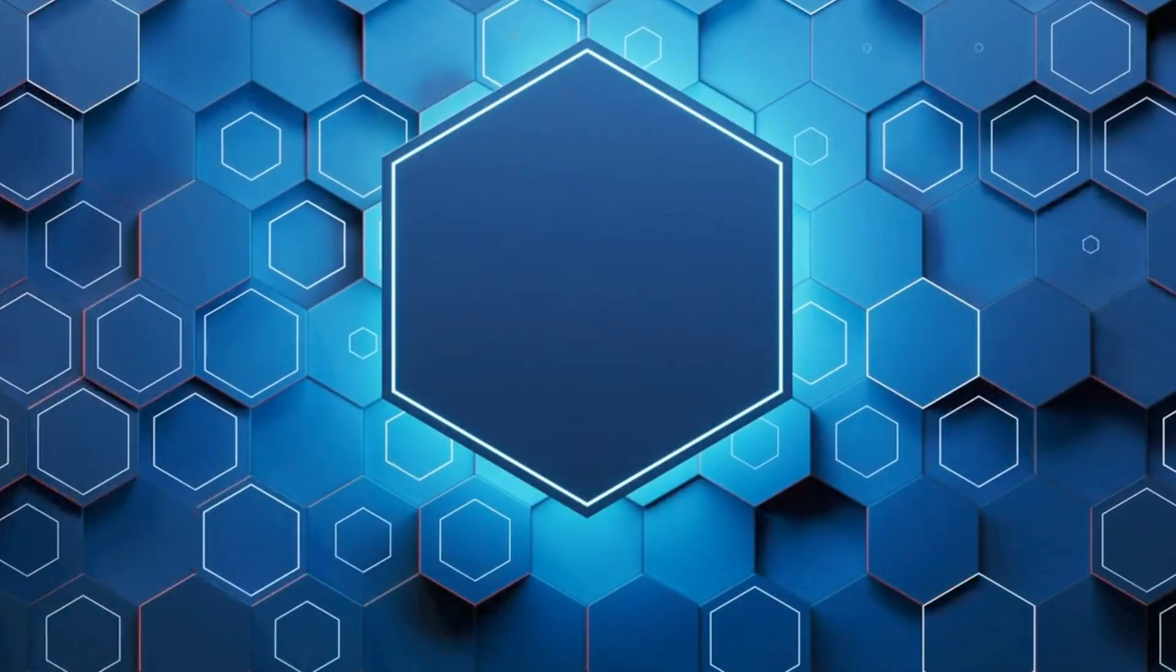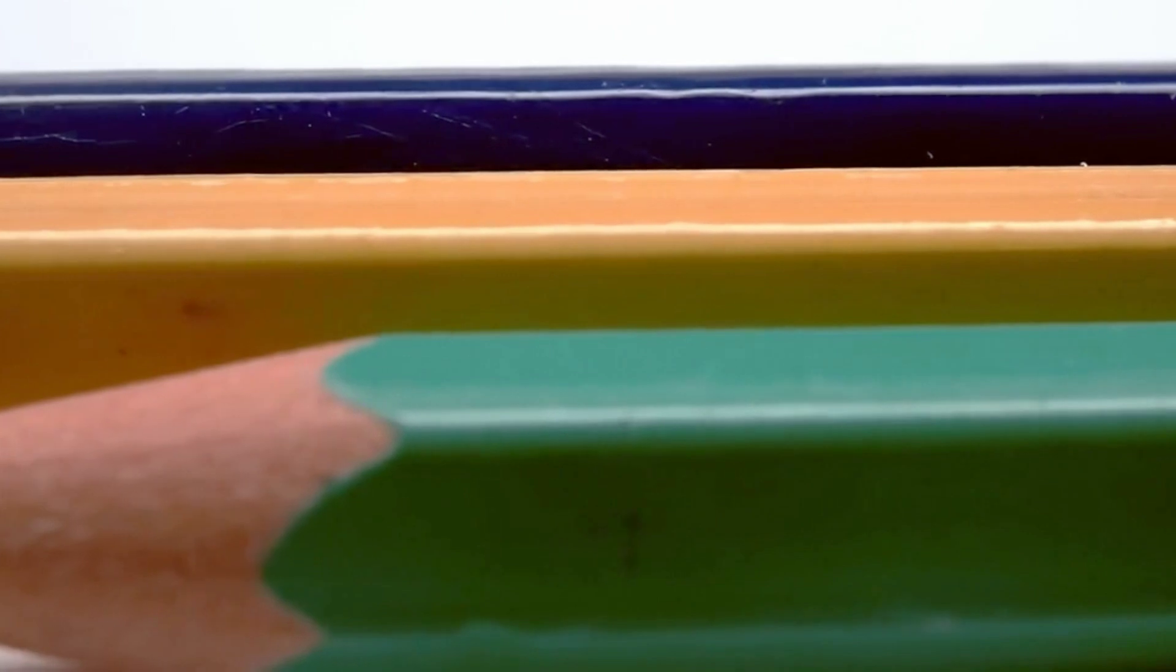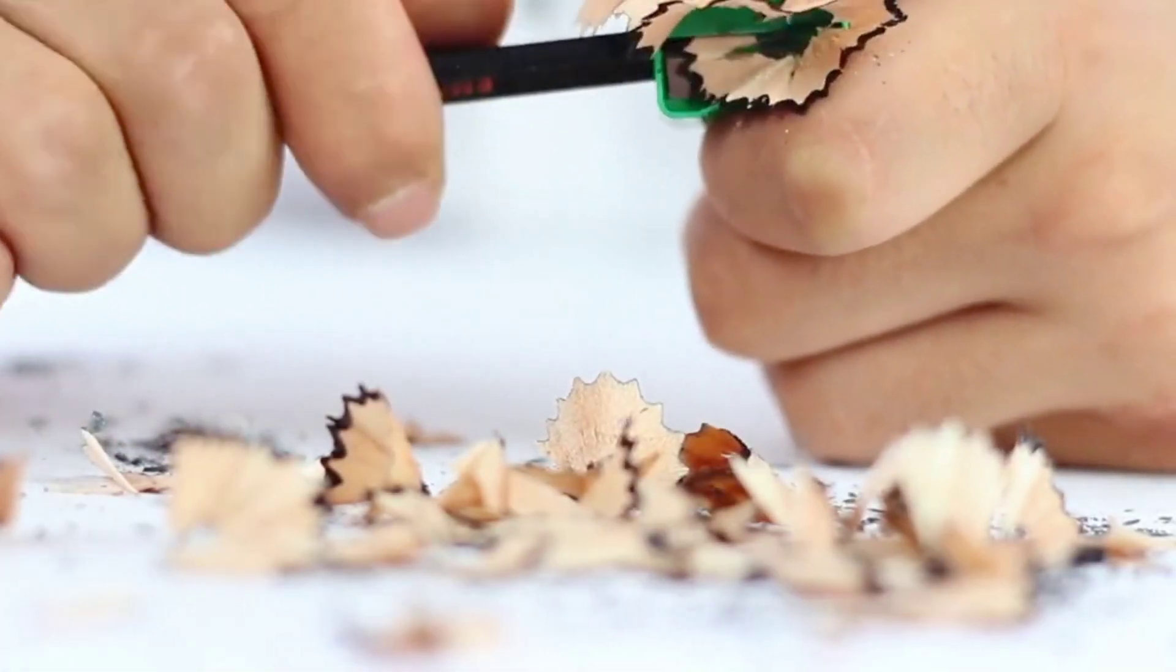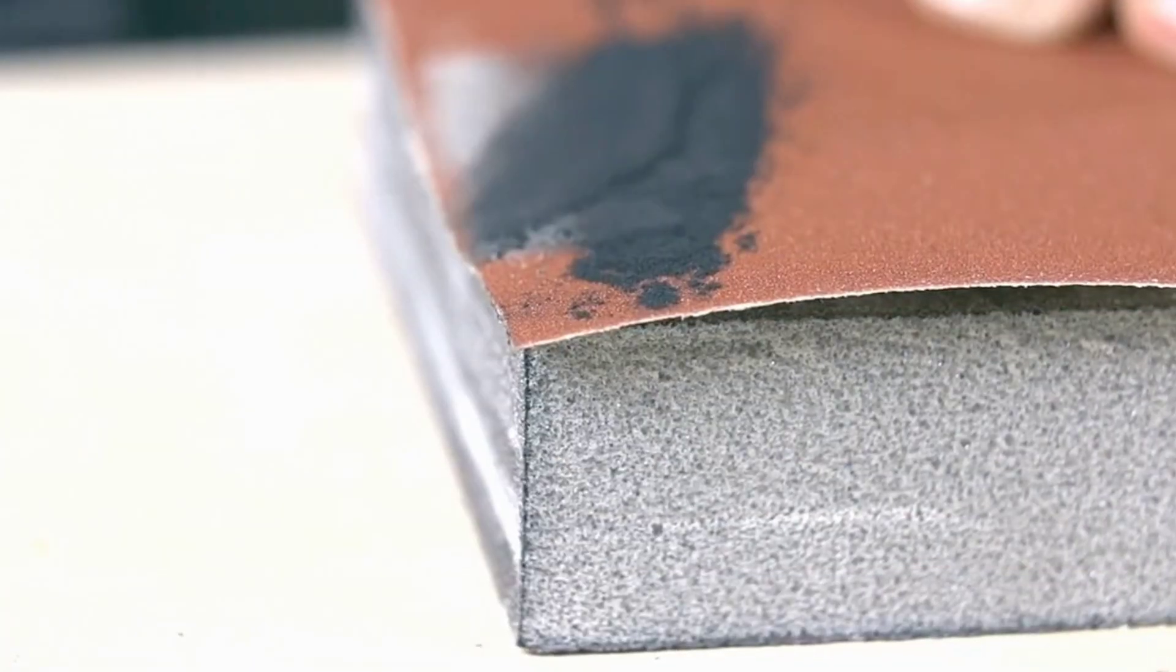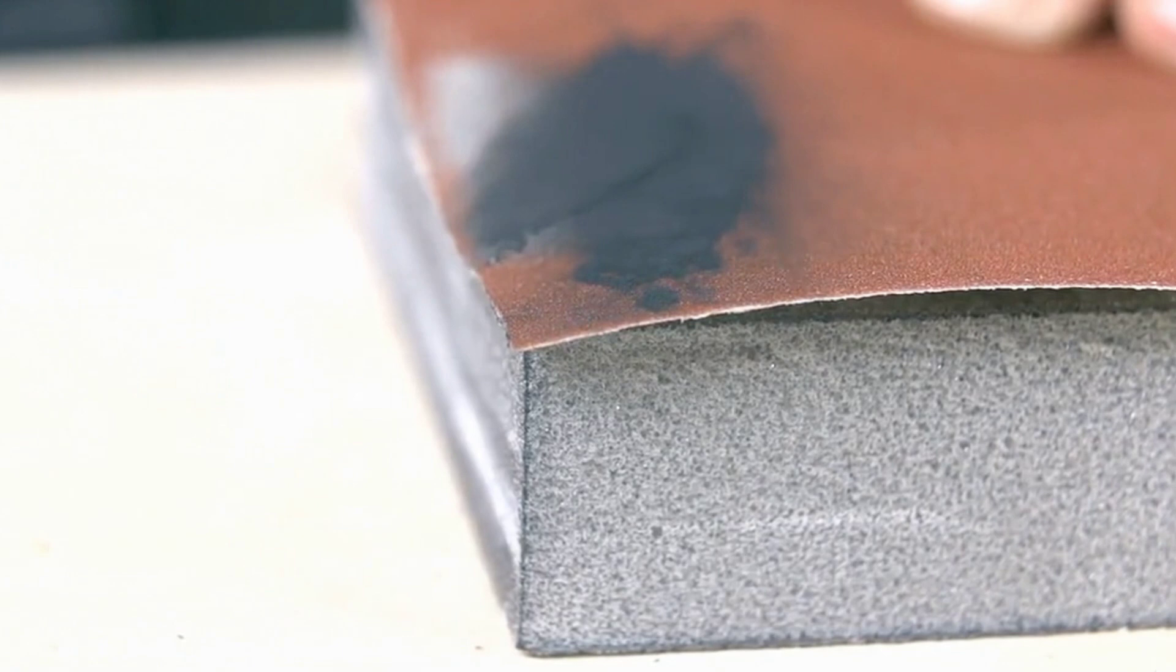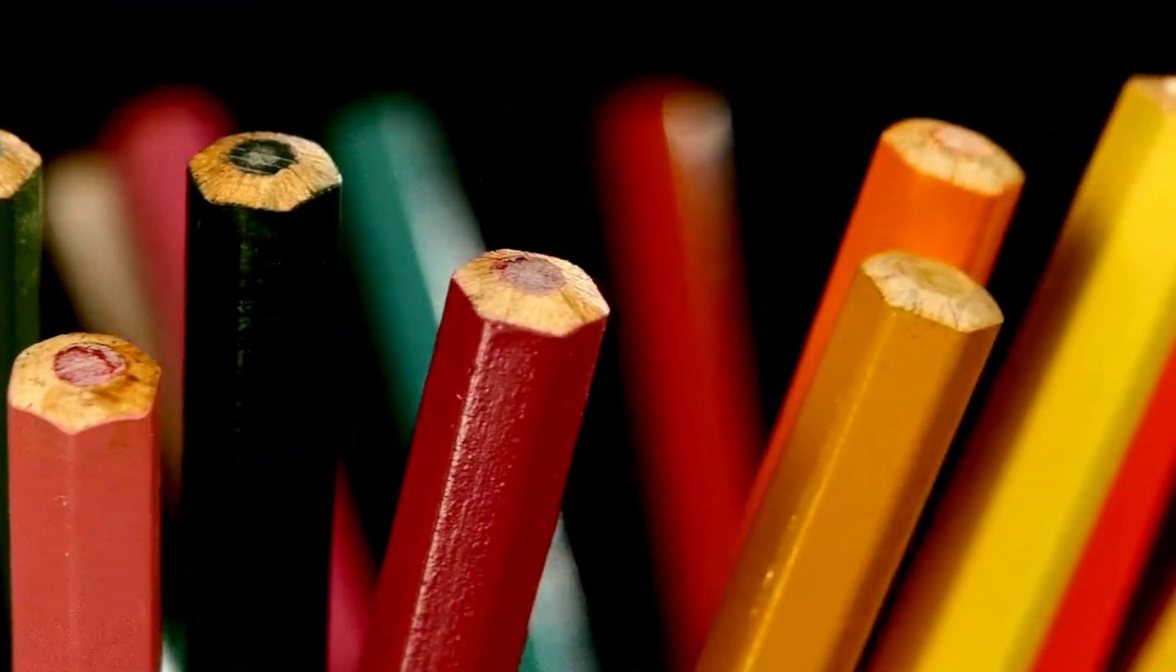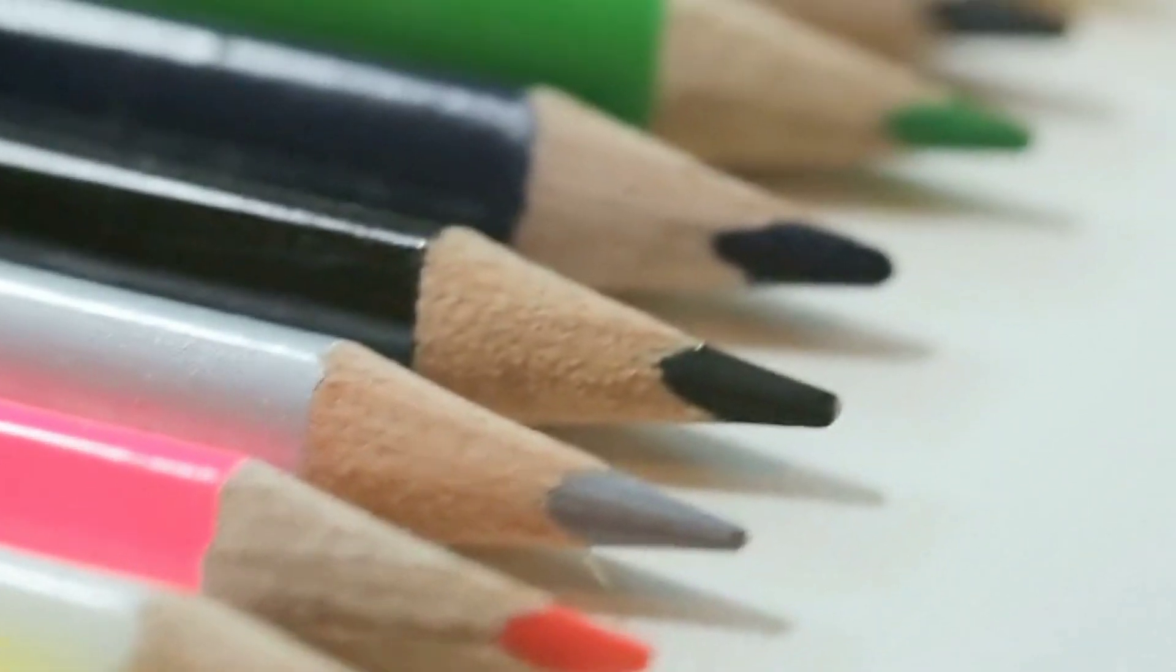But why is the pencil typically hexagonal, you might wonder? The answer lies in ergonomics. The six-sided design sits comfortably in the hand, providing a firm grip and preventing the pencil from rolling off tables or desks. The process of encasing not only provides the pencil with its characteristic shape, but it also protects the delicate graphite core from breakage. This is an art as much as it is a science, a harmonious blend of practicality and aesthetics. Now that our pencil has taken shape, it's time to make it shine.